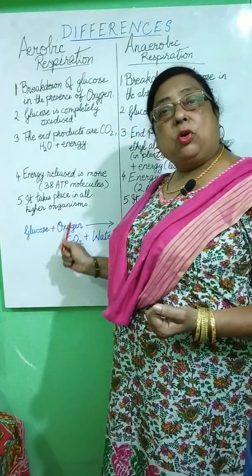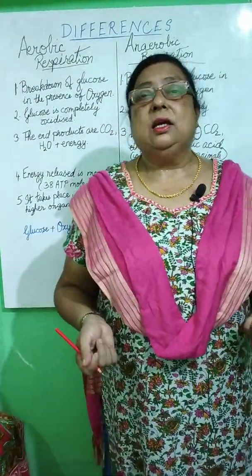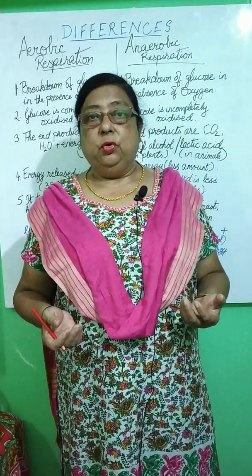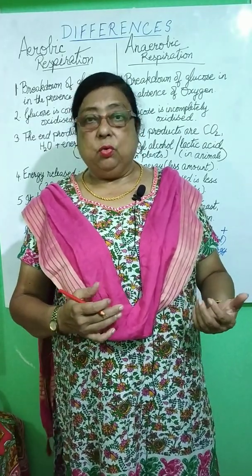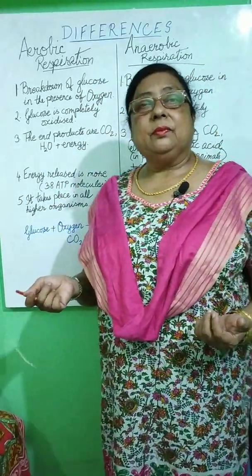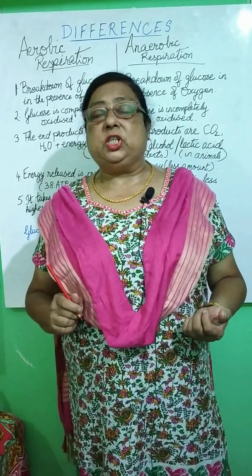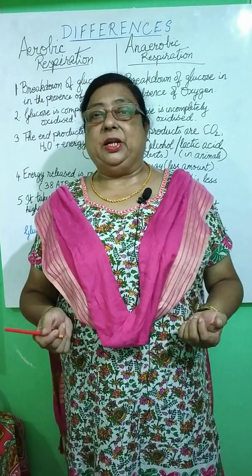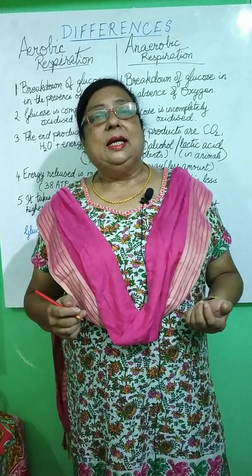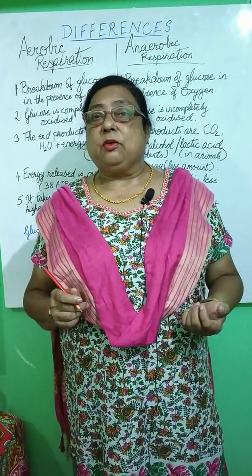Glucose combines with oxygen and carbon dioxide, water, and energy are formed as end products — that is, oxidation of food takes place. Because this type of respiration takes place in the presence of oxygen, it is called aerobic respiration. This type of respiration takes place partially in the cytoplasm and mainly in the mitochondria of all the cells of our bodies.